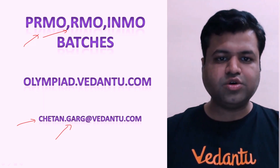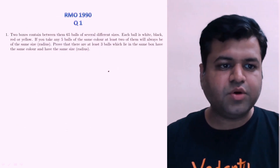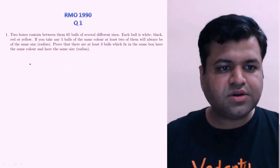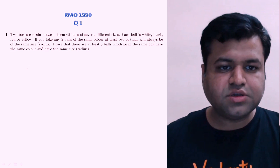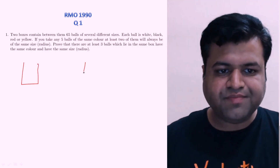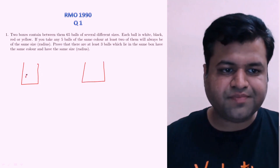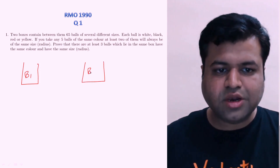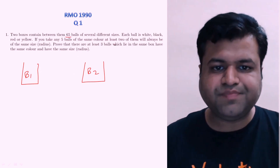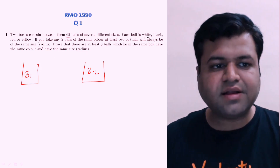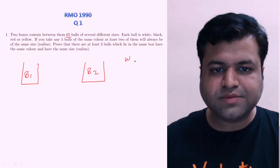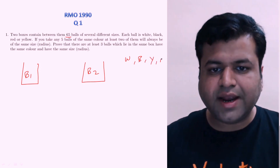So let's start with question number one of RMO 1990. This question says: two boxes contain between them 65 balls of several different sizes. So there are two boxes — box one and box two — and the total number of balls between them is 65. Each ball is white, black, red, or yellow, so basically there are four available colors: white, black, yellow, and red.